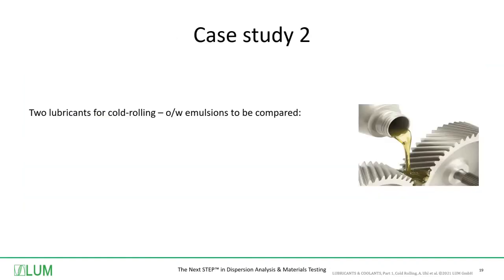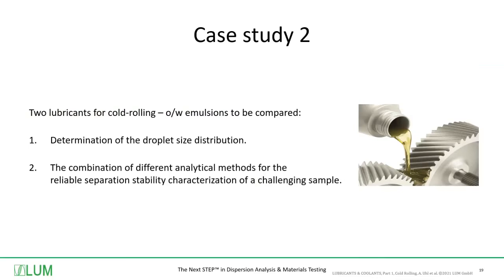Let's come to the second case study. Again, two oil and water-based emulsions — lubricants for cold rolling — were to be compared: first by the determination of the droplet size distribution, and second by the combination of different analytical methods for the reliable separation stability characterization of a challenging sample.